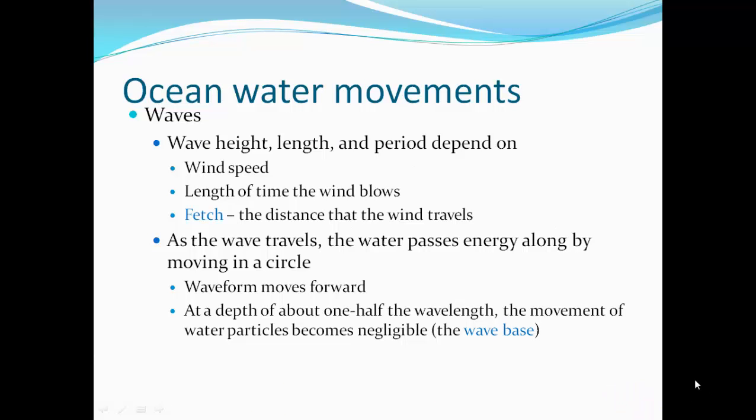Wave height, length, and period depend on wind speed, the length of time the wind is blowing, and the fetch — the distance that the wind travels. As the wave travels, water passes energy along by moving in a circle. The waveform shape moves forward. At depth about one half the wavelength, the movement of water particles becomes negligible.